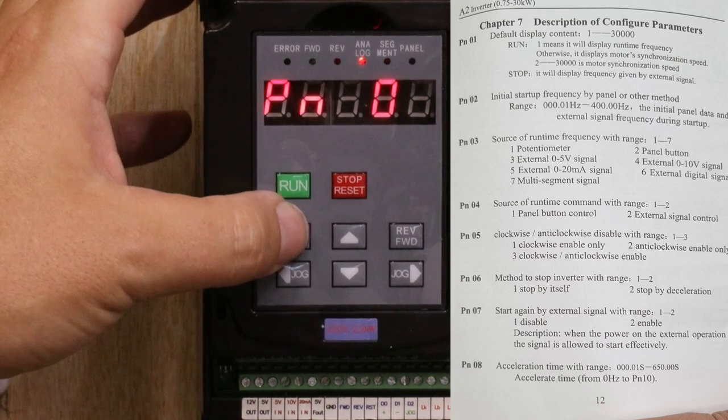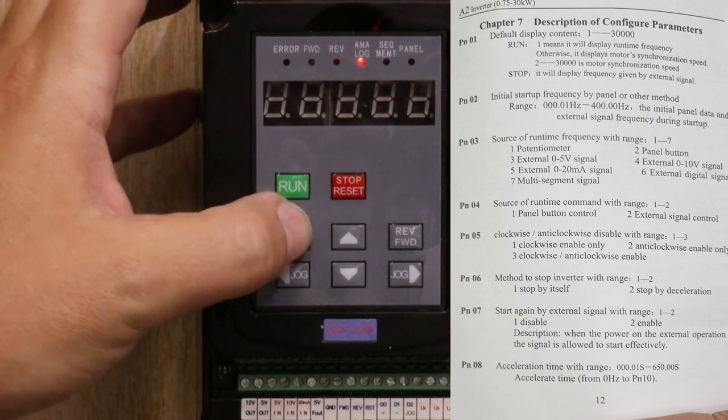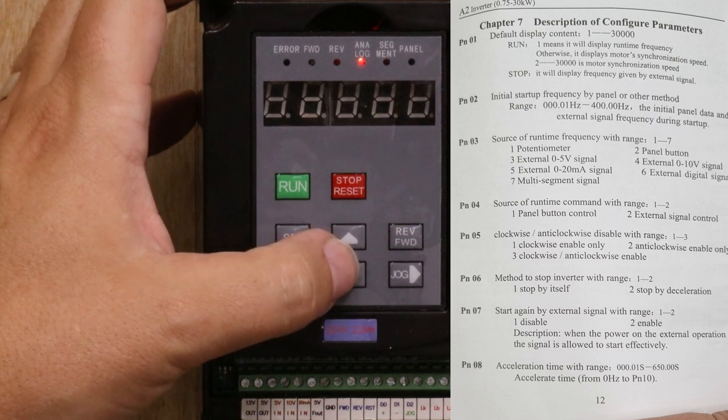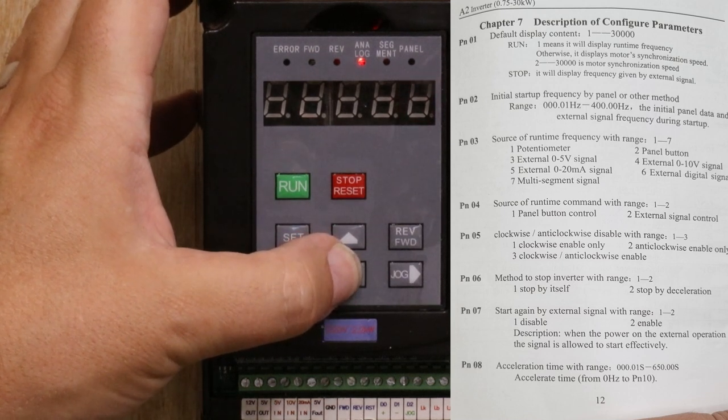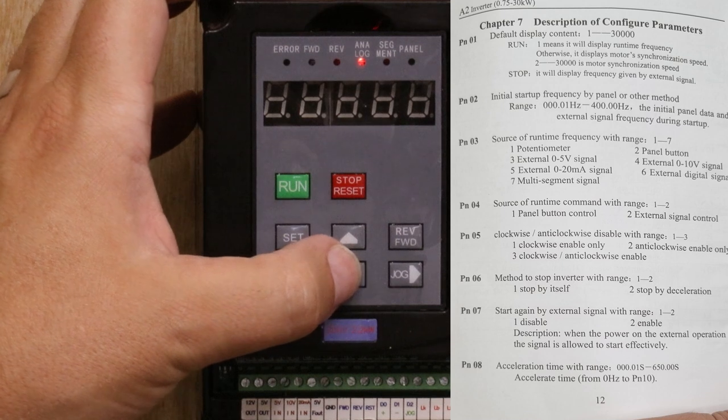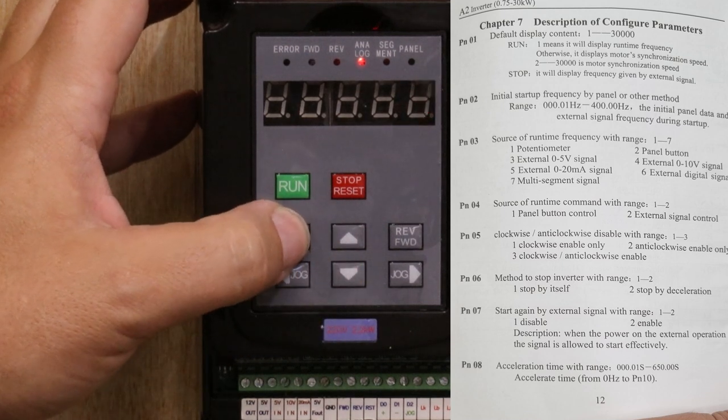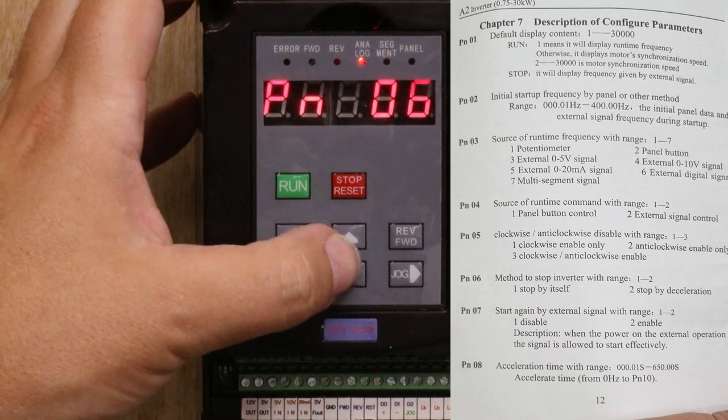Now the next menu is number five. This is telling the spindle what direction we expect it to travel in. Number three is both directions, number two is reverse, and number one is to go forward or clockwise. So that is what we want. We're going to select okay for that.